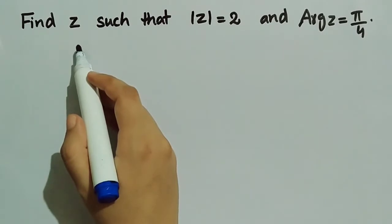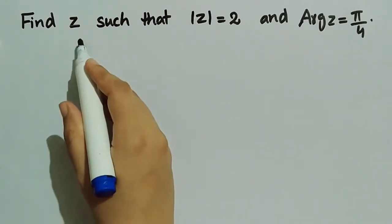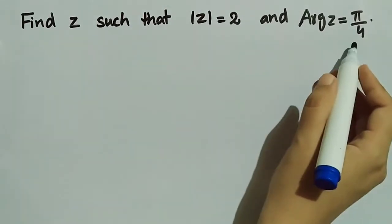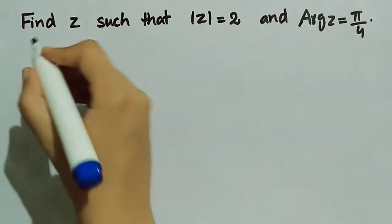In this case, we have to find the complex number z such that its modulus is equal to 2 and principal argument is equal to π/4.